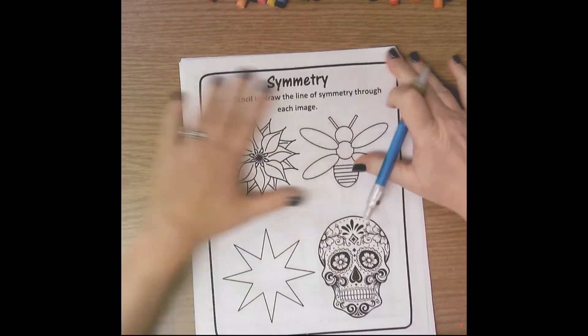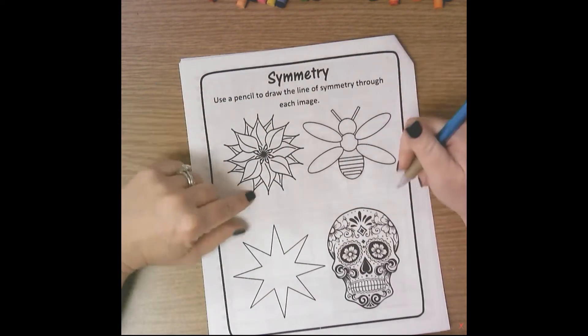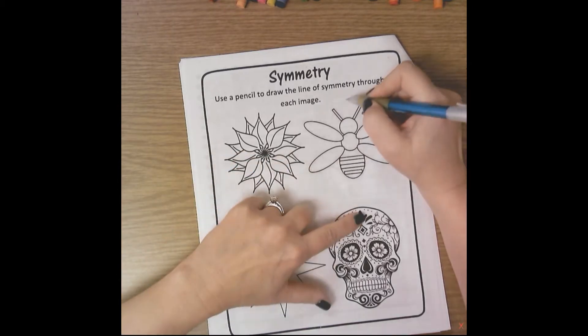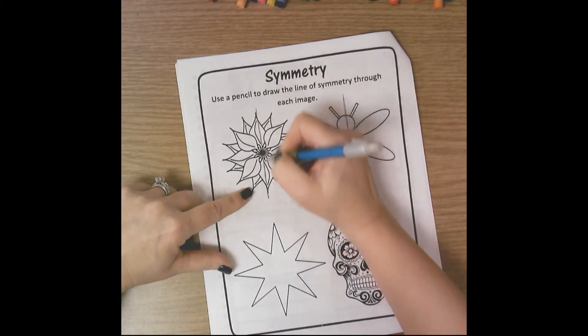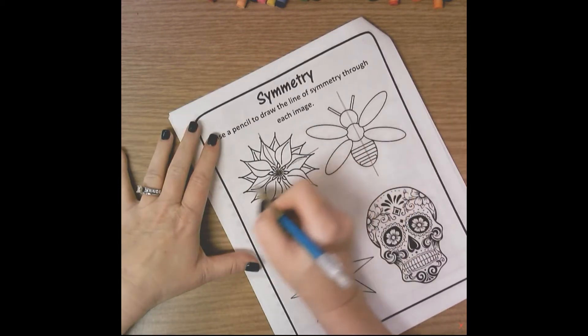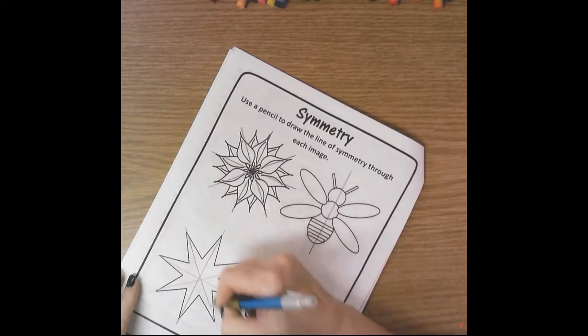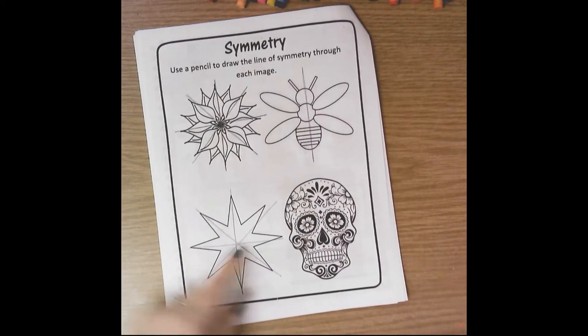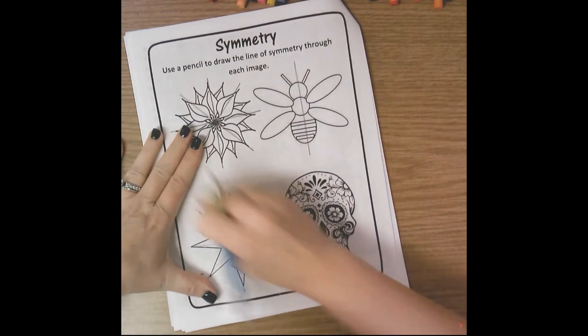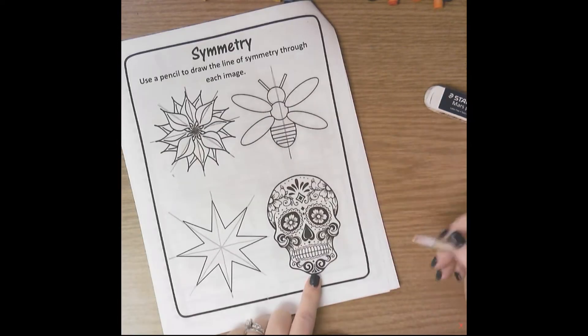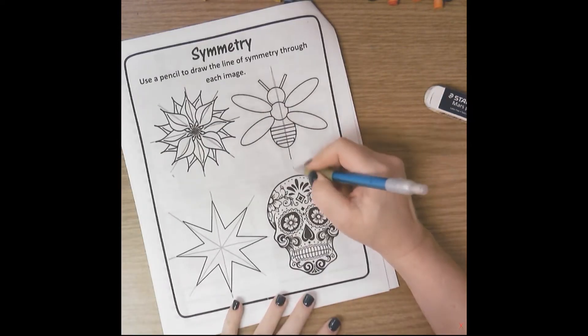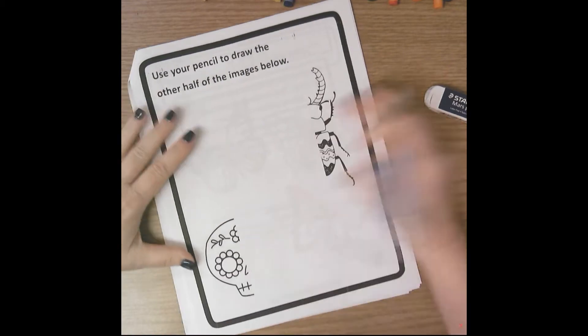Turning to the next page: use a pencil to draw the line of symmetry through each image. This shape has only one line of symmetry. This is radial symmetry so it has multiple lines of symmetry — your lines of symmetry should meet in the middle. Then for the sugar skull, we'll draw the line of symmetry. Next we're going to draw the other half of a sugar skull, or half of a bug.